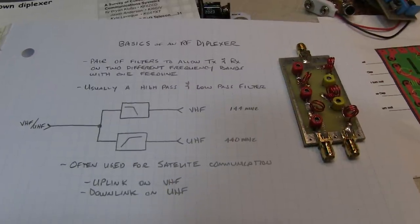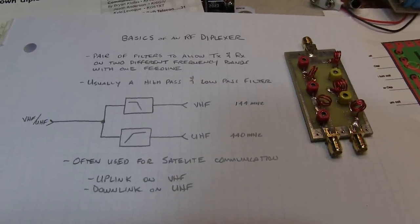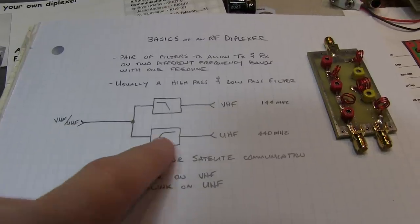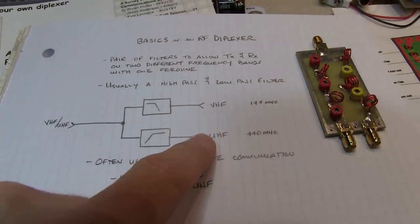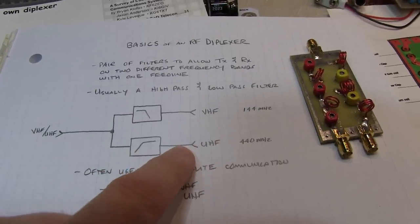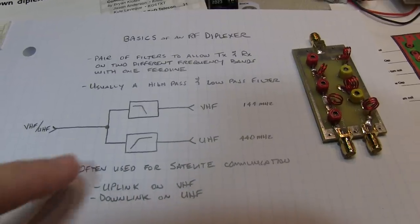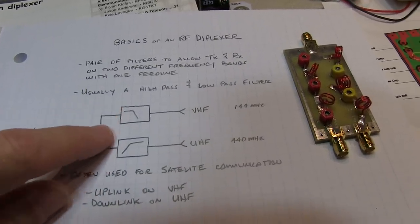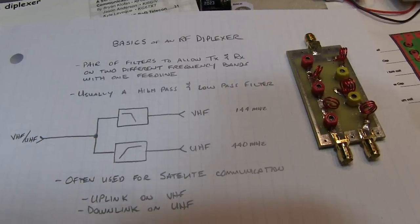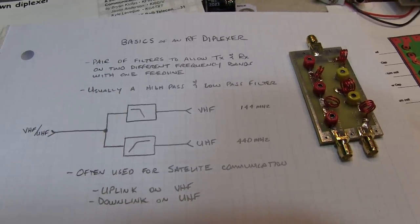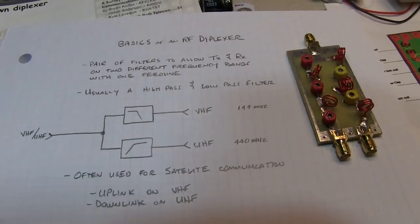Now, a diplexer is not to be confused with a duplexer. A duplexer performs the same function, allowing transmit and receive to two different antennas or paths. But typically those paths would both be in the same frequency band. In that case, these filters would be much sharper and often be resonant cavities. But for a diplexer, it's typically easier because these frequencies are in different bands.